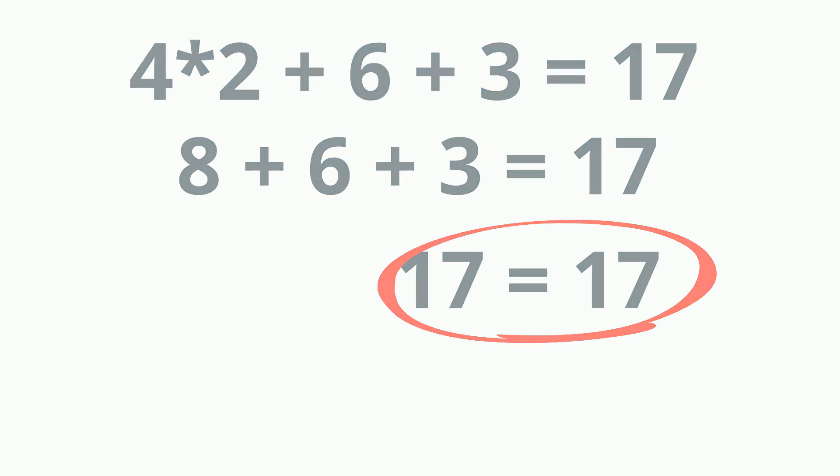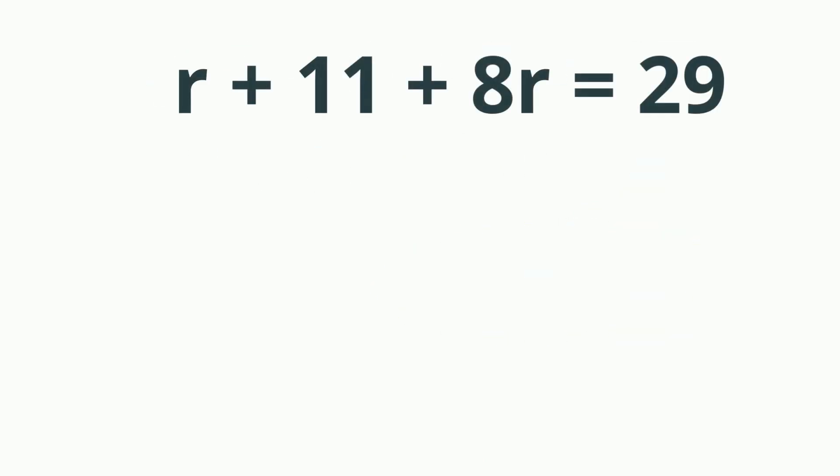Next, we have r plus 11 plus 8r equals 29. Again, I'm going to begin by combining like terms. So I'm going to add r and 8r. That gives me 9r and then I'm going to bring everything else down.